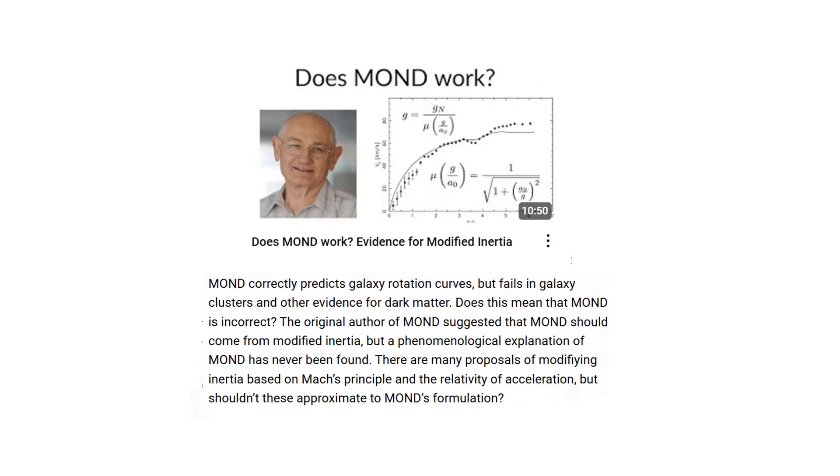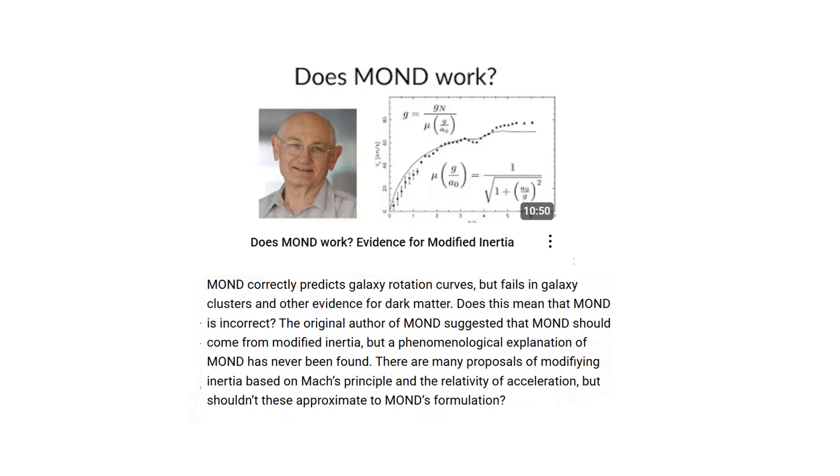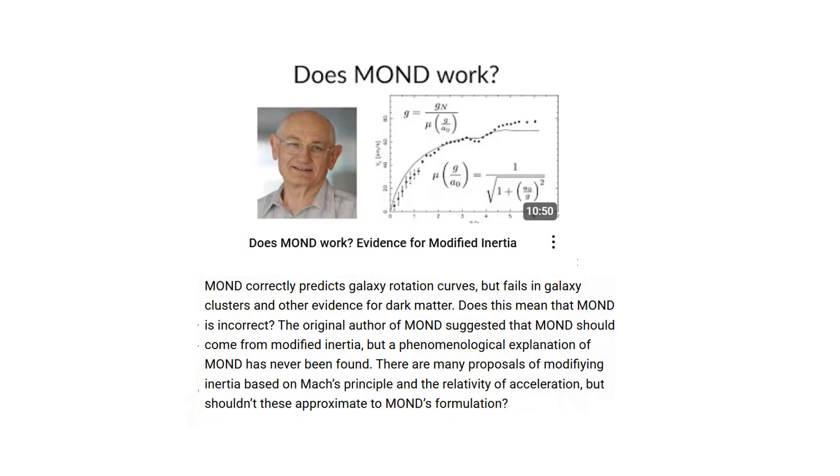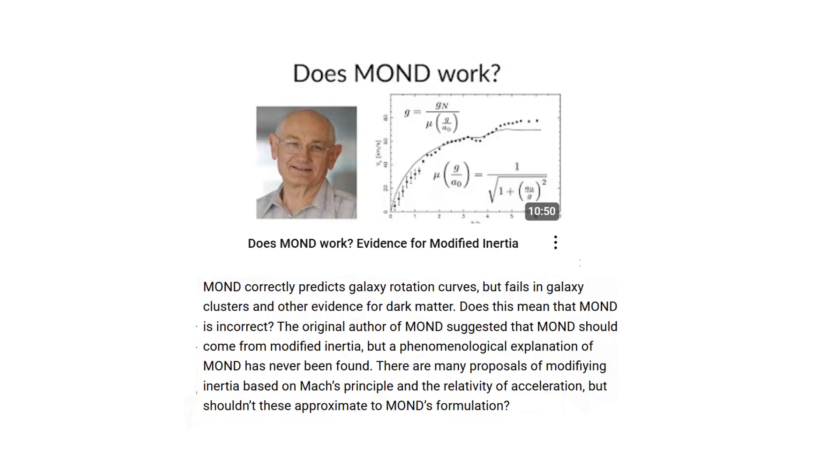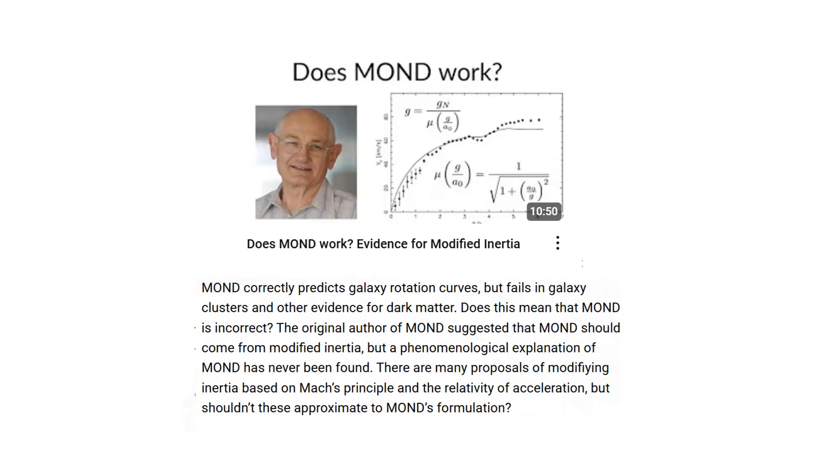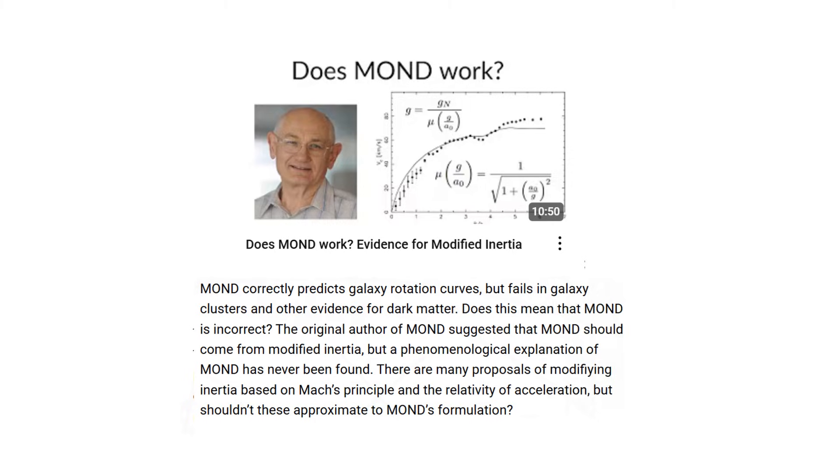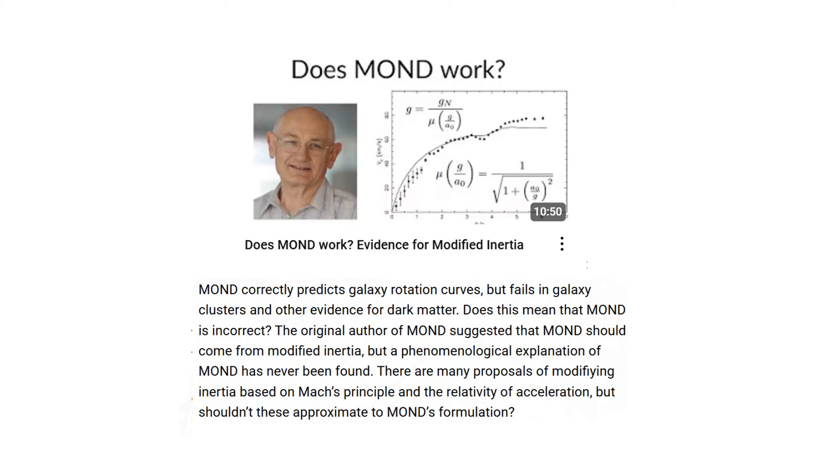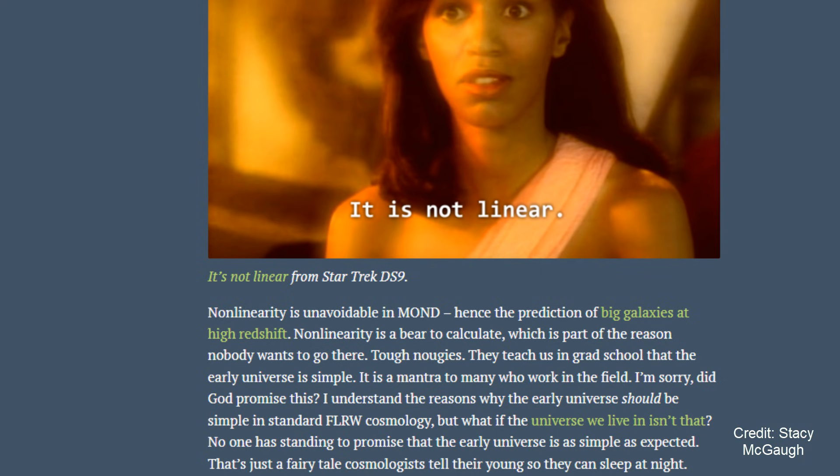We explained Modified Newtonian Dynamics MOND in our previous video, and how impressive it is that a simple modification to Newton's laws introducing a single new constant can generally remove the need for dark matter in galaxies at these regimes. MOND is necessarily a nonlinear theory. And this is imposed by observations.